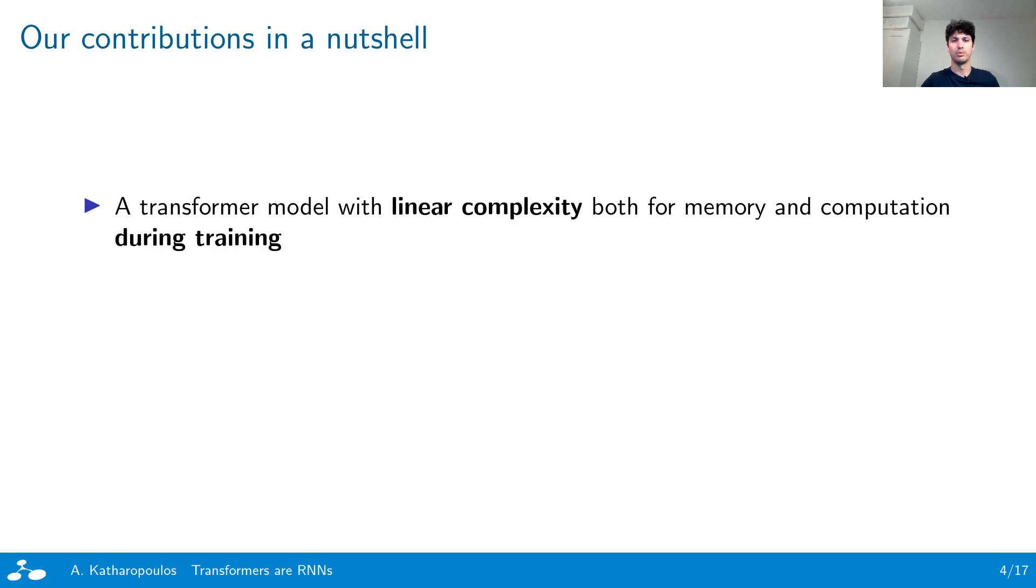In this work we propose a transformer variation that has linear memory and computational complexity during training. This allows us to train efficiently on sequences tens of thousands of elements long, whereas softmax transformers would not fit in a GPU even with batch size of one.